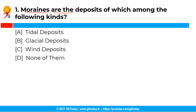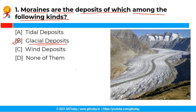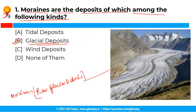The first question is: Moraines are the deposits of which among the following kinds? The correct answer is option B, that is glacial deposits. Moraine is the name for raw glacial debris — rocks that are loosened and carried by glacial ice, then deposited where the ice melts. So, Moraine is a type of glacial deposit.